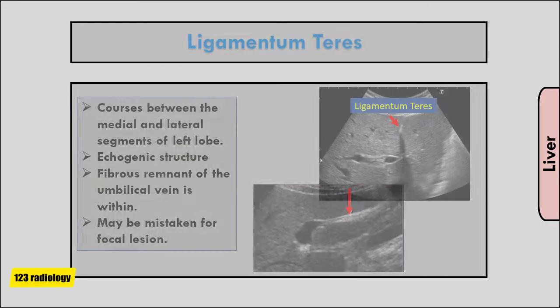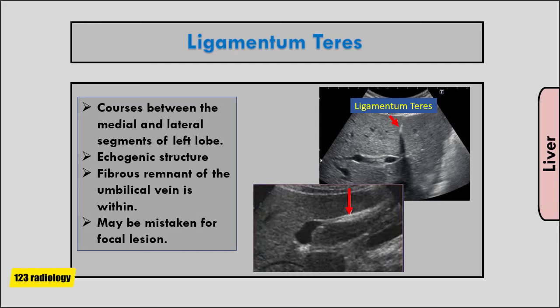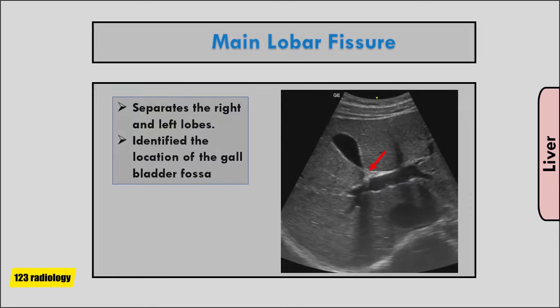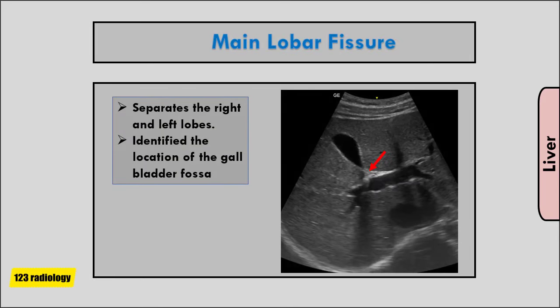The ligamentum teres is an important landmark to identify, and it courses between the medial and lateral segments of the left lobe, appearing as an echogenic structure. The fibrous remnant of the umbilical vein is within this ligament, and it may be mistaken for a focal lesion. The main lobar fissure separates the right and left lobes, but more importantly it identifies the location of the gallbladder fossa.